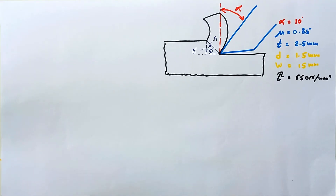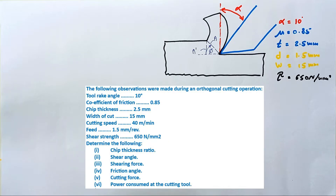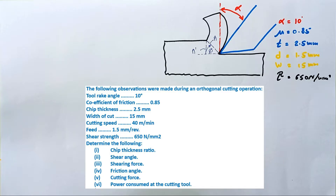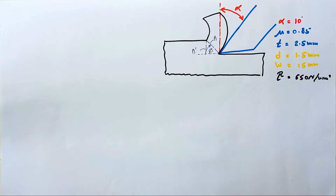In this problem, the following observations were made during an orthogonal cutting operation: tool rake angle 10°, coefficient of friction 0.85, chip thickness 2.5 mm, width of cut 50 mm, cutting speed 40 meters per minute, depth of cut 1.5 mm, shear strength 650 N/mm². We need to determine the chip thickness ratio, shear angle, shearing force, friction angle, cutting force, and power consumed at the cutting tool.